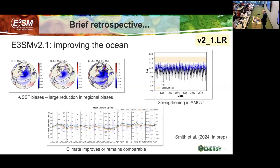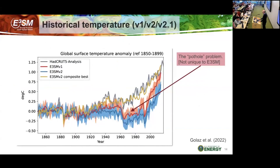There was a minor release of V2.1 with significant improvement in the ocean. The top plot shows a large reduction in SST biases, particularly over the North Atlantic, along with a corresponding increase in the strength of AMOC. The mean climate is basically comparable or slightly better. This is what we call a minor release: if there's a significant change that doesn't warrant a full major release, we'll do a minor release of the model.